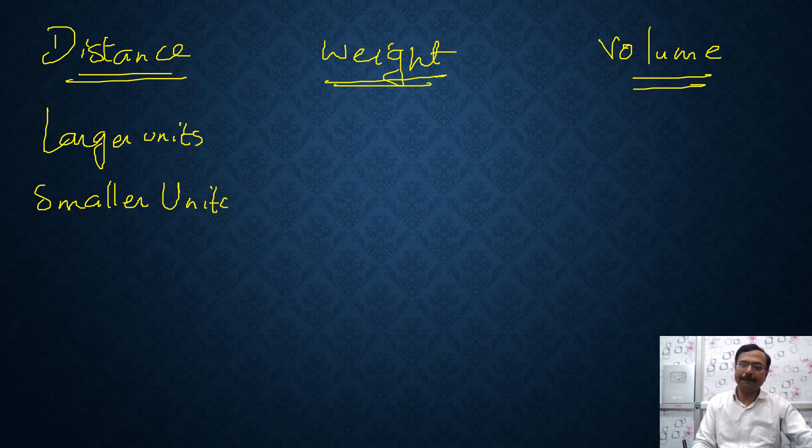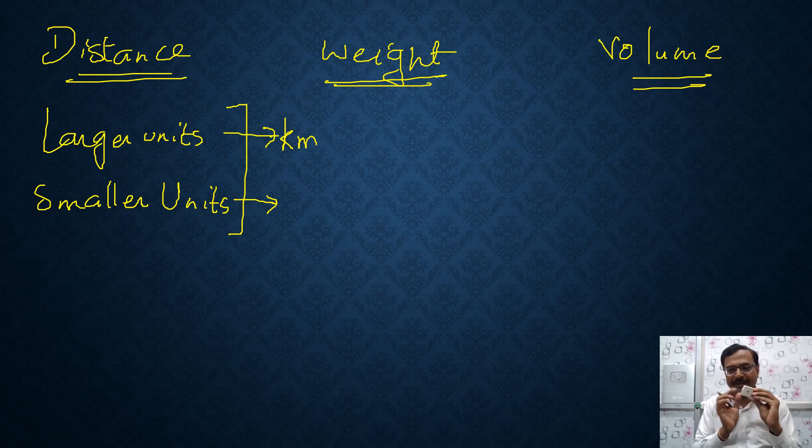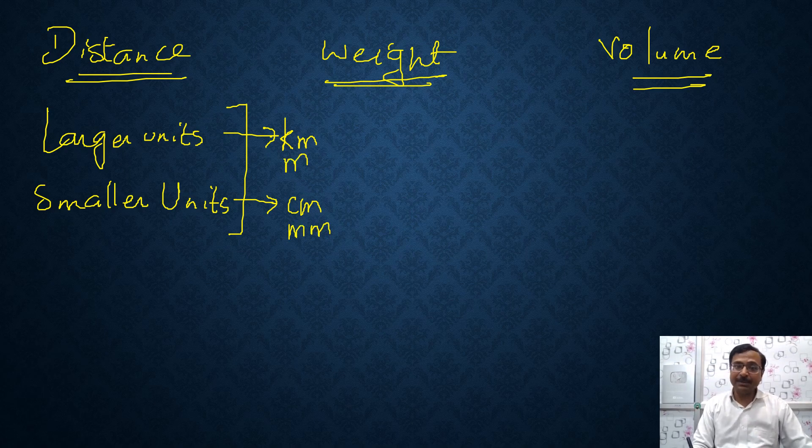See there are some larger units and there are some smaller units. Every physical quantity has some large units so that if you have to measure large distances like if I have to measure the distance of my place from the national capital, it will be in kilometers. It will not be in centimeters or millimeters. So large units are required. For distance it is kilometer. Smaller units like if I have to measure the length of this object, that object will be in centimeters not in kilometers. So there are smaller units centimeters, millimeters, larger units like kilometers, meters and similarly for weight.